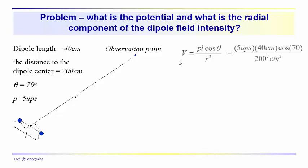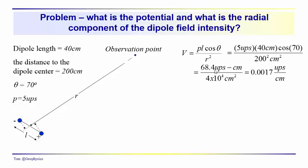To calculate the potential, we use V equals PL cosine theta over R squared: five ups times 40 centimeters times cosine 70 degrees, over 200 centimeters squared. That gives us 68.4 ups·centimeters over 4 times 10 to the 4th centimeters squared, which equals 0.0017 ups per centimeter — our potential in units of pole strength per centimeter.